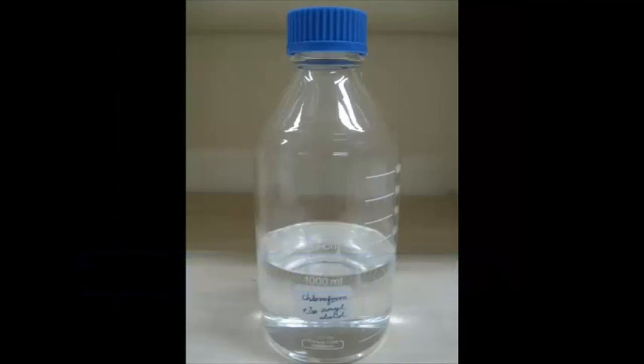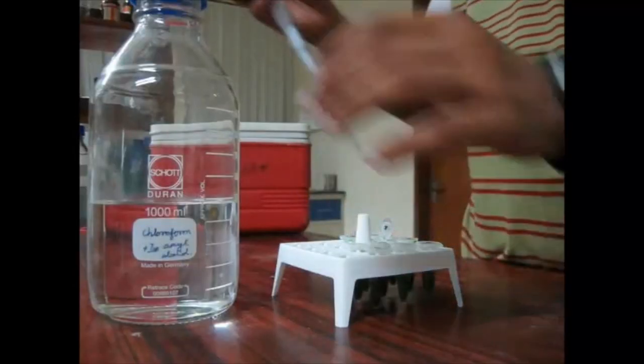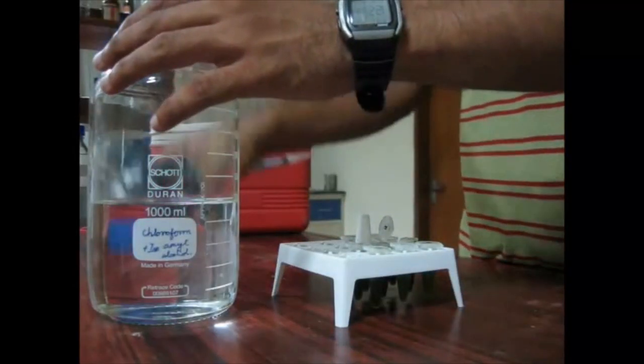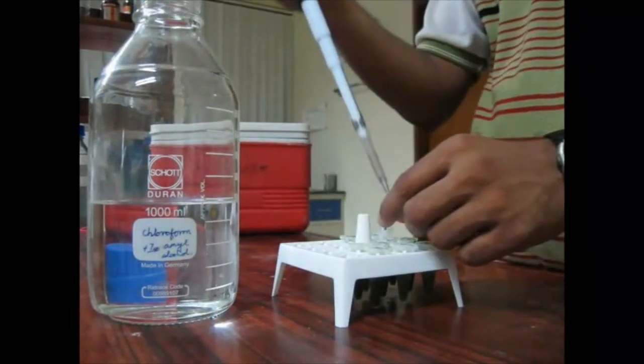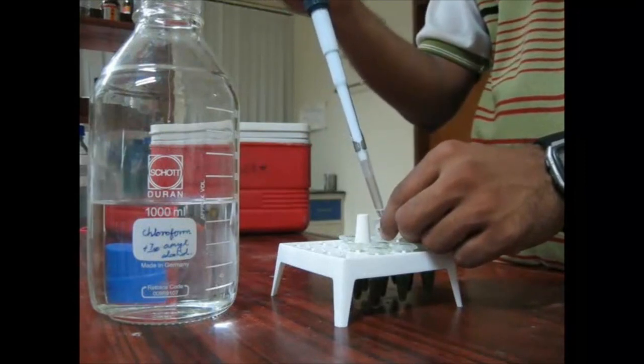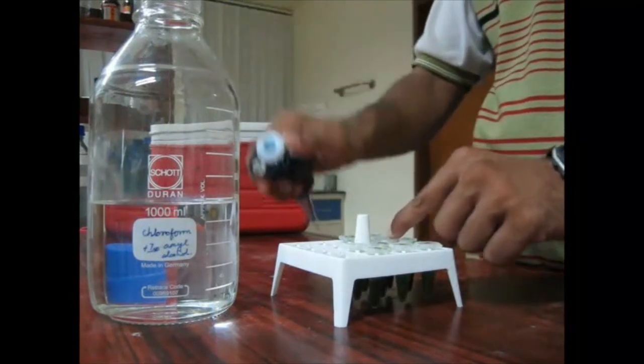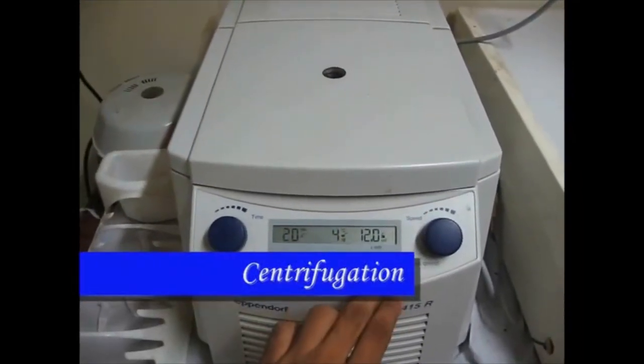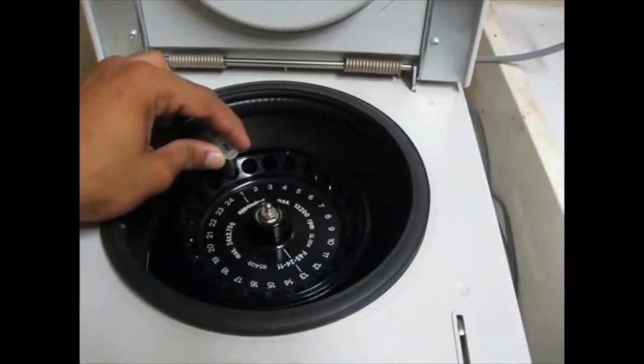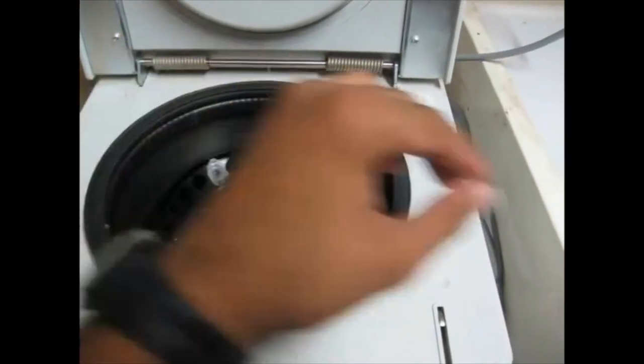Chloroform isoamyl alcohol helps in denaturing proteins and facilitates separation of aqueous and organic phases. Isoamyl alcohol is an anti-foaming agent. To the sample, add 400 µL of chloroform isoamyl alcohol in the ratio 24 is to 1.